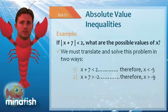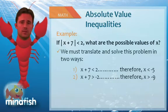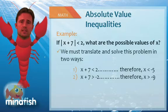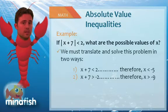First, x plus 7 is less than 2. This is basically only dealing with the positive solution. So solving now by subtracting 7 from both sides, we have x is less than negative 5. You might be tempted to think you're done.